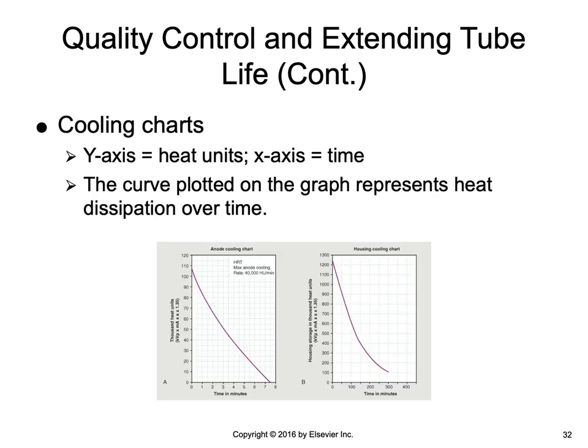The anode cooling chart and the housing cooling chart both work the same way. The anode cooling chart is used to determine the time it takes for the anode to cool based on the factors given, and the housing cooling chart does the same for the tube housing. The y-axis represents heat units, usually expressed in thousands, and the x-axis represents time in minutes. The curve plotted on the graph is the cooling curve, representing heat dissipation over time — basically how long it takes for the tube to cool.